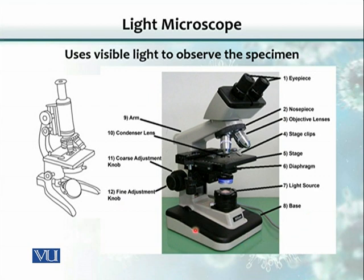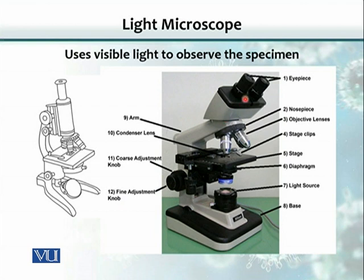This is the stage or the base where the rest of all these parts are lying. Here is the illumination source, which is the light source. This is the stage on which we put a slide or specimen. Then this part is the objective lens — there are three or four different lenses with different powers of magnification. This part is called the eyepiece, and here is a knob for focusing the image.